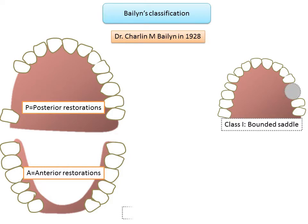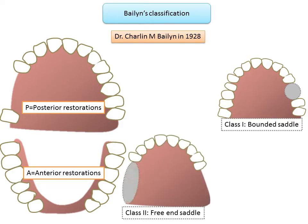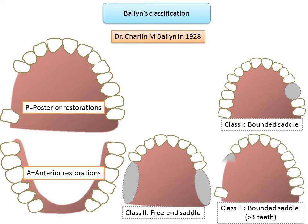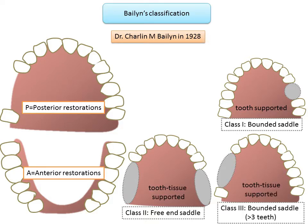They are further sub-classified as: Class 1, a bounded saddle having no more than three teeth missing; Class 2, a free-end saddle where there is no distal abutment tooth — a bilaterally edentulous area where there are no teeth in the posterior region; and Class 3, again a bounded saddle but with more than three teeth absent. So in Class 1 and Class 3 both are bounded saddles, but Class 1 has fewer than three teeth missing while Class 3 has more than three missing. Accordingly, Class 1 is tooth-supported whereas Class 2 and Class 3 are tooth-tissue supported.